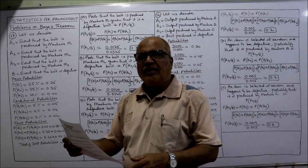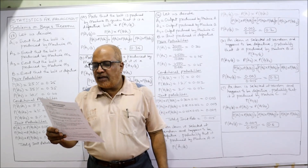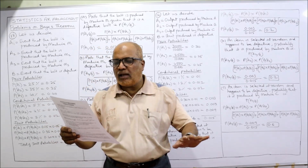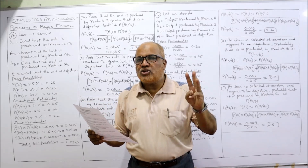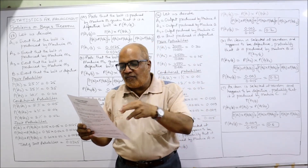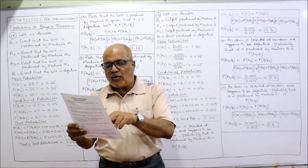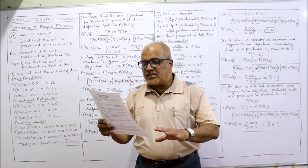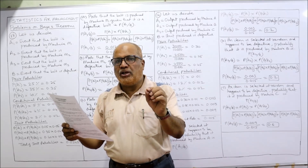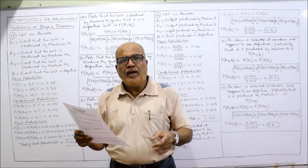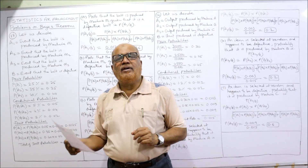Now see problem 13. In a bolt factory, machines M1, M2, and M3 manufacture 25%, 35%, and 40% of the total output respectively. Out of this output, 5%, 4%, and 2% are defective bolts — that means M1 makes 5% defective bolts, M2 makes 4% defective bolts, and M3 makes 2% defective bolts.